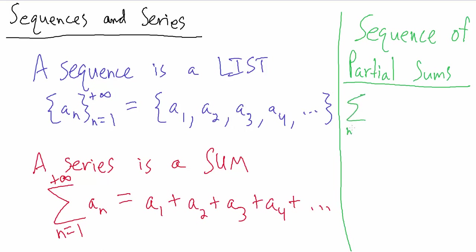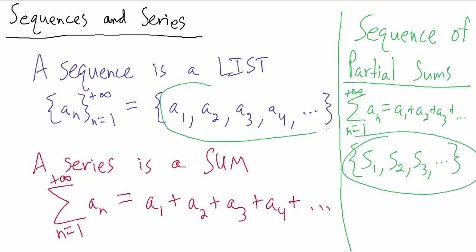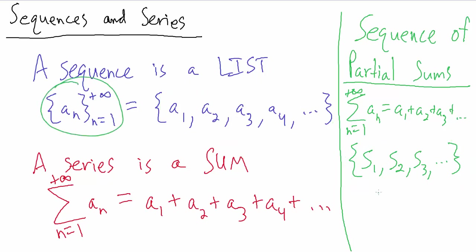If we have a series — the sum from n equals 1 to positive infinity of a_n — we know that's a₁ plus a₂ plus a₃ plus dot dot dot. There's an associated sequence of partial sums: S₁, S₂, S₃, dot dot dot. Remember, a sequence is a list, so this is a sequence of partial sums. We can also write it in compact notation as {S_n} from n equals 1 to positive infinity.